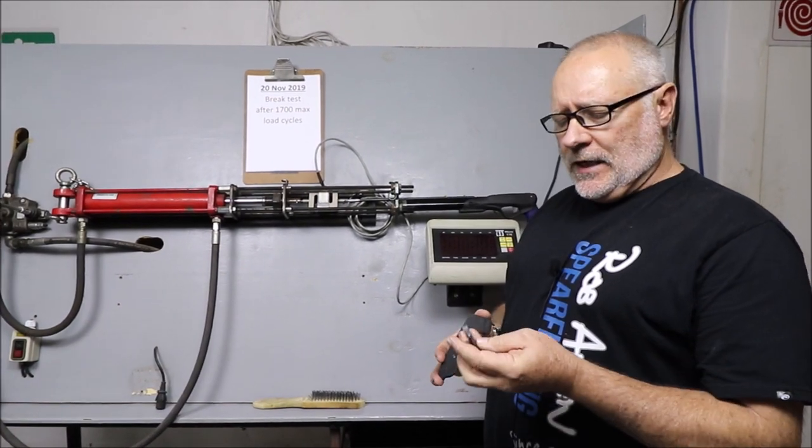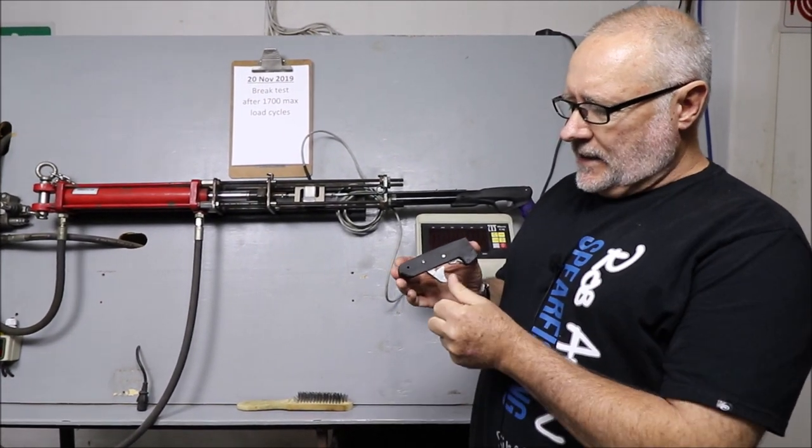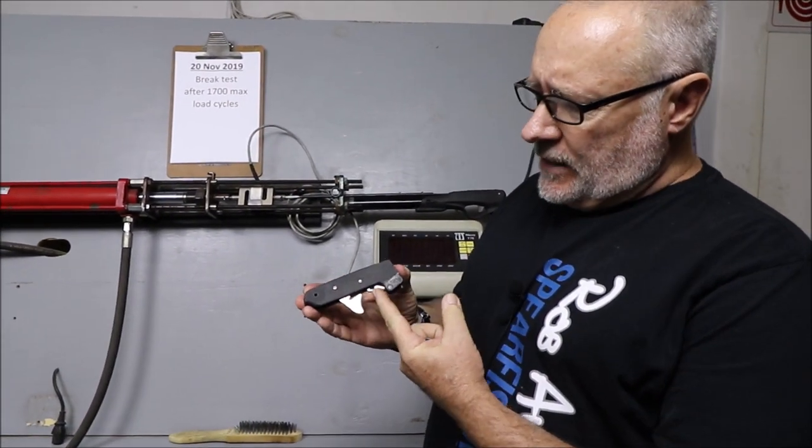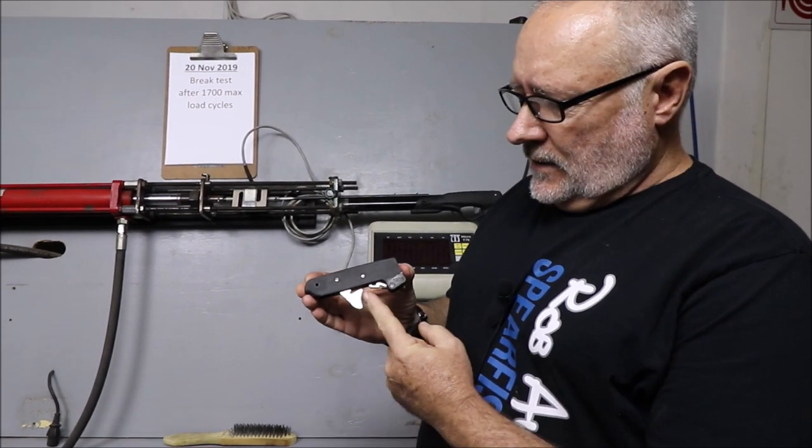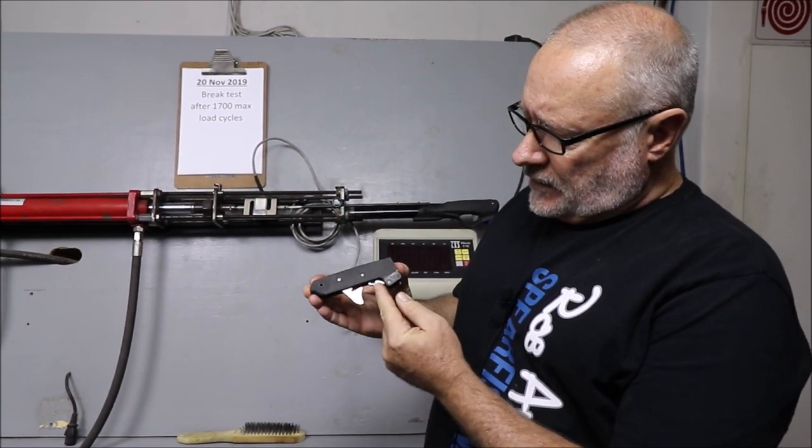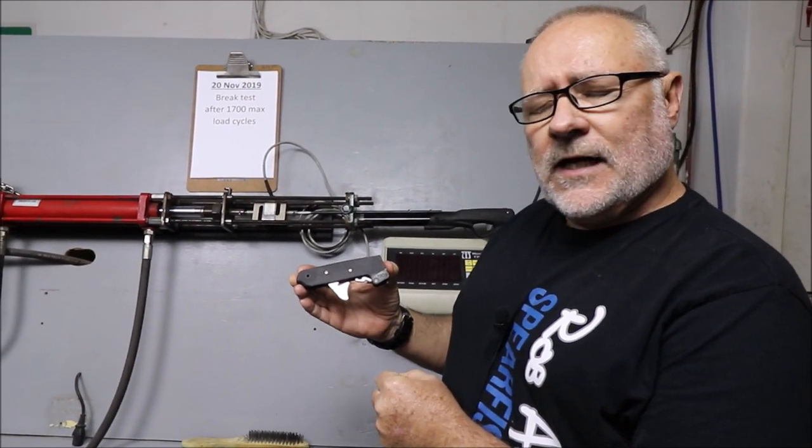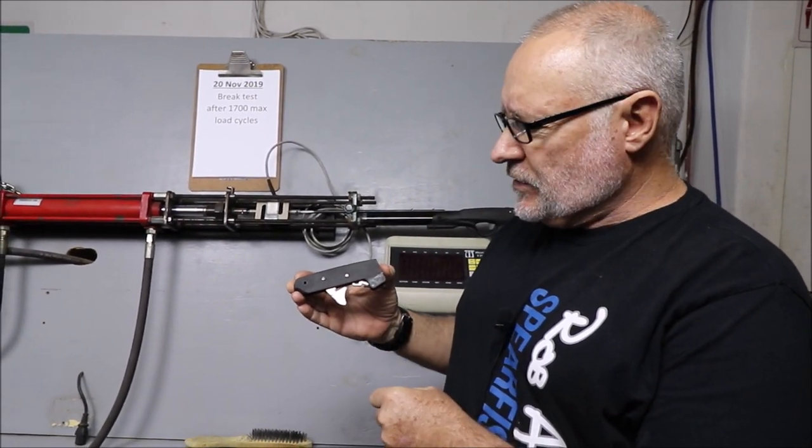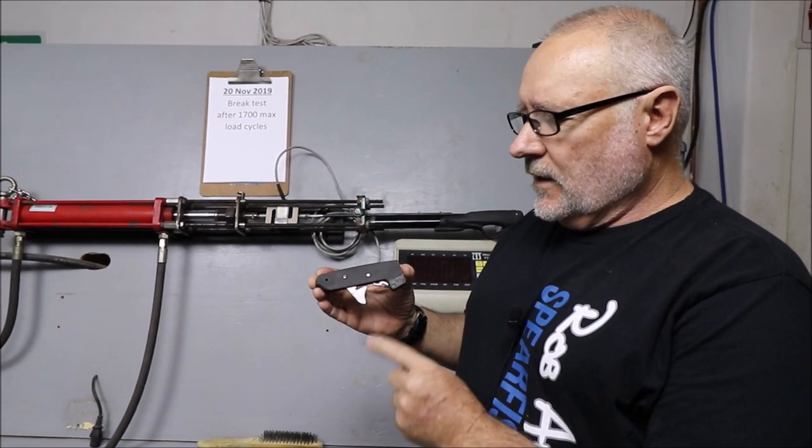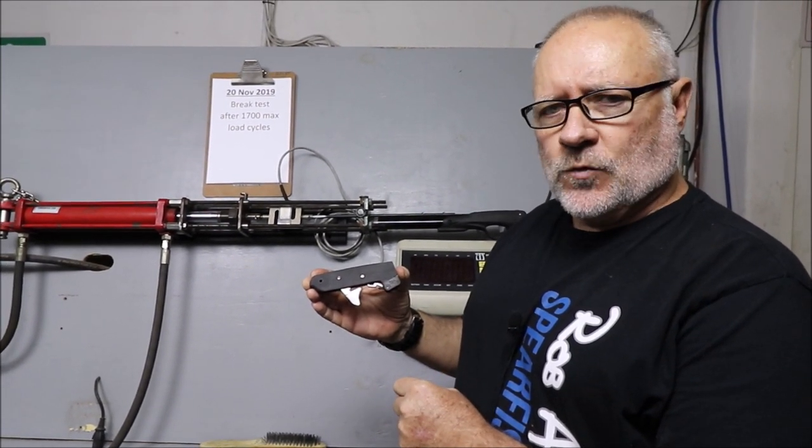For our next video, we're going to show the difference between a plastic trigger and a stainless trigger. This stainless trigger is not one of ours—it's a retrofitted trigger. We're going to run it in our cycling machine where we'll cycle as much as possible and see what changes over time. Then we'll do a brake test with this one as well.